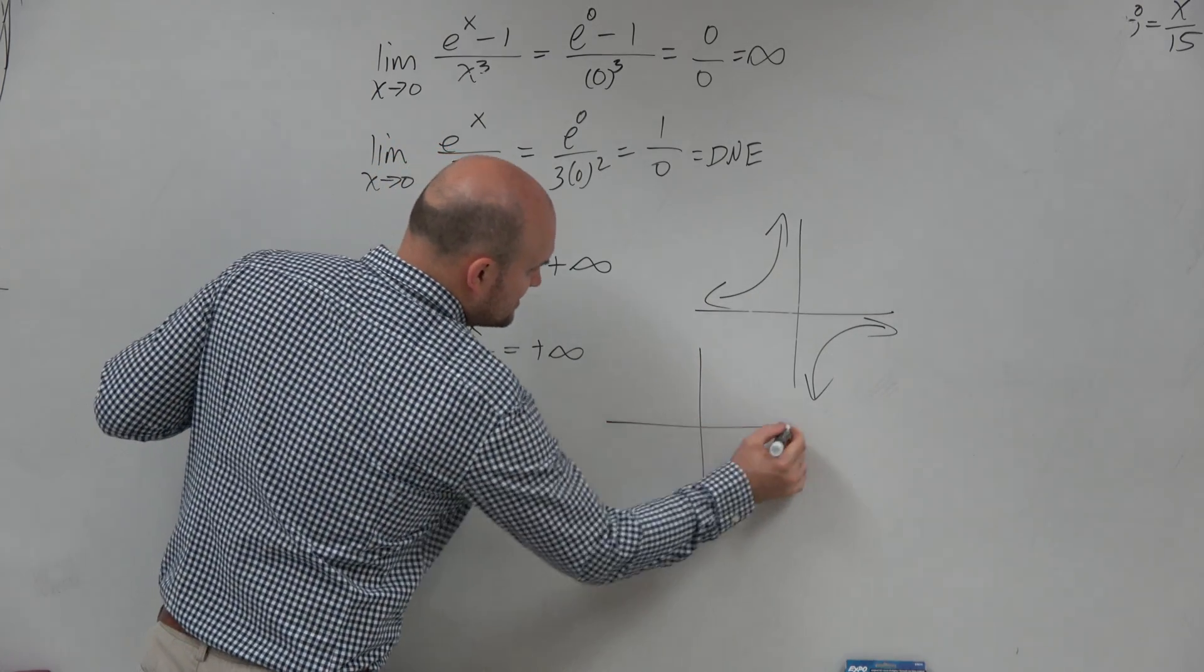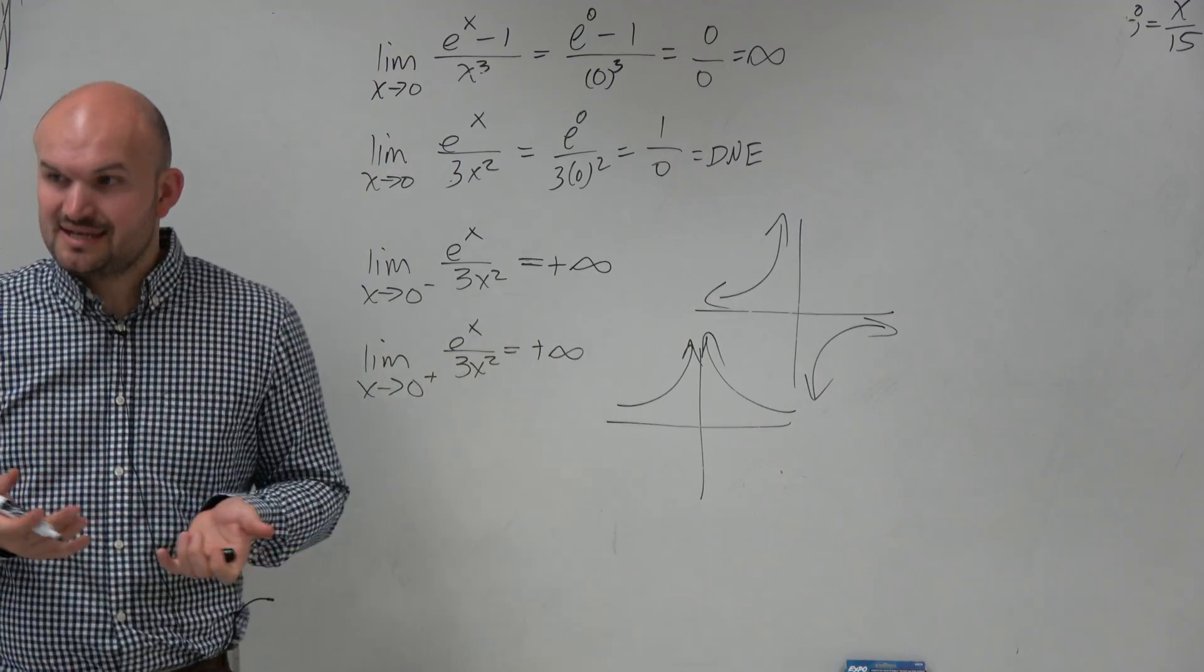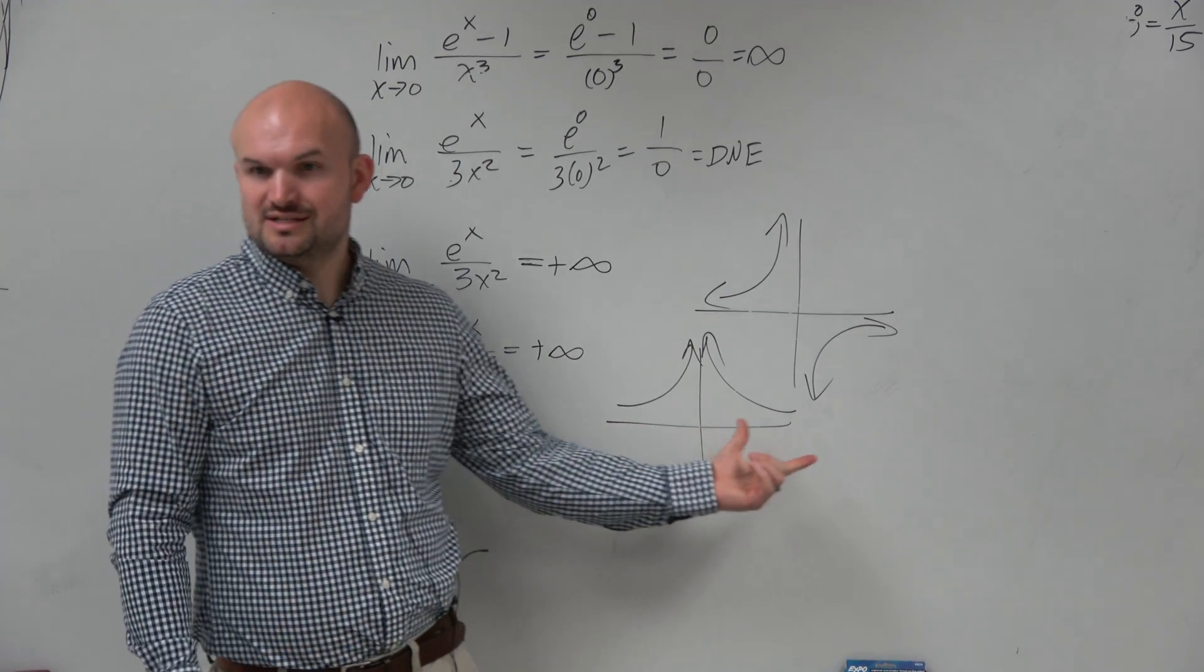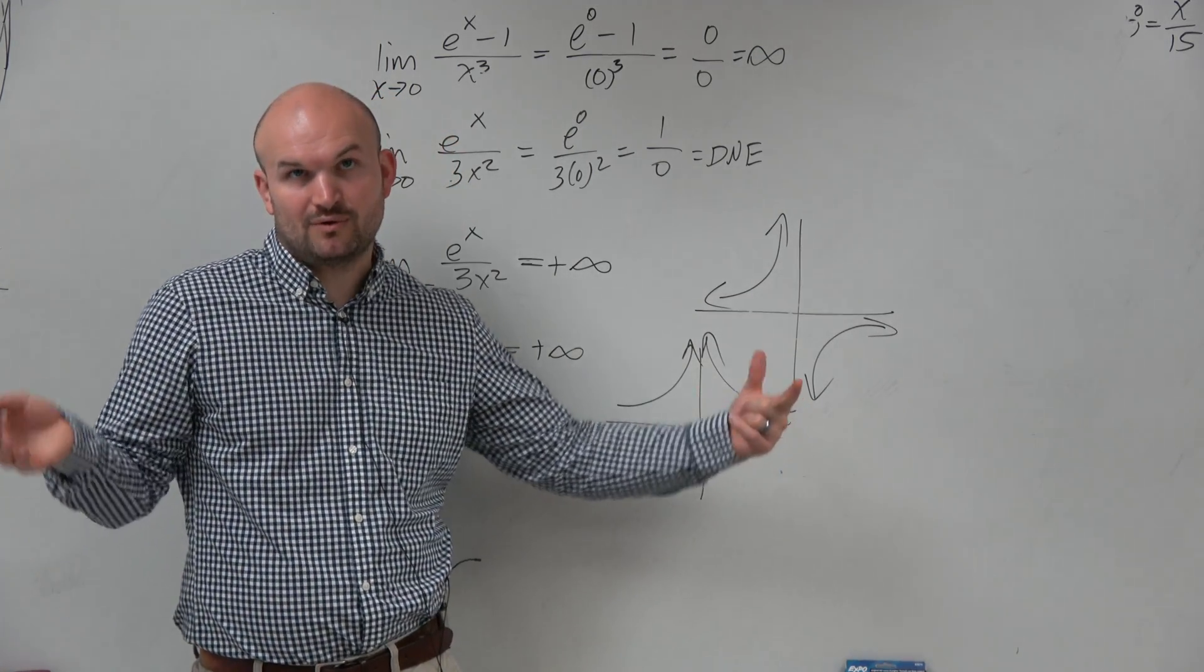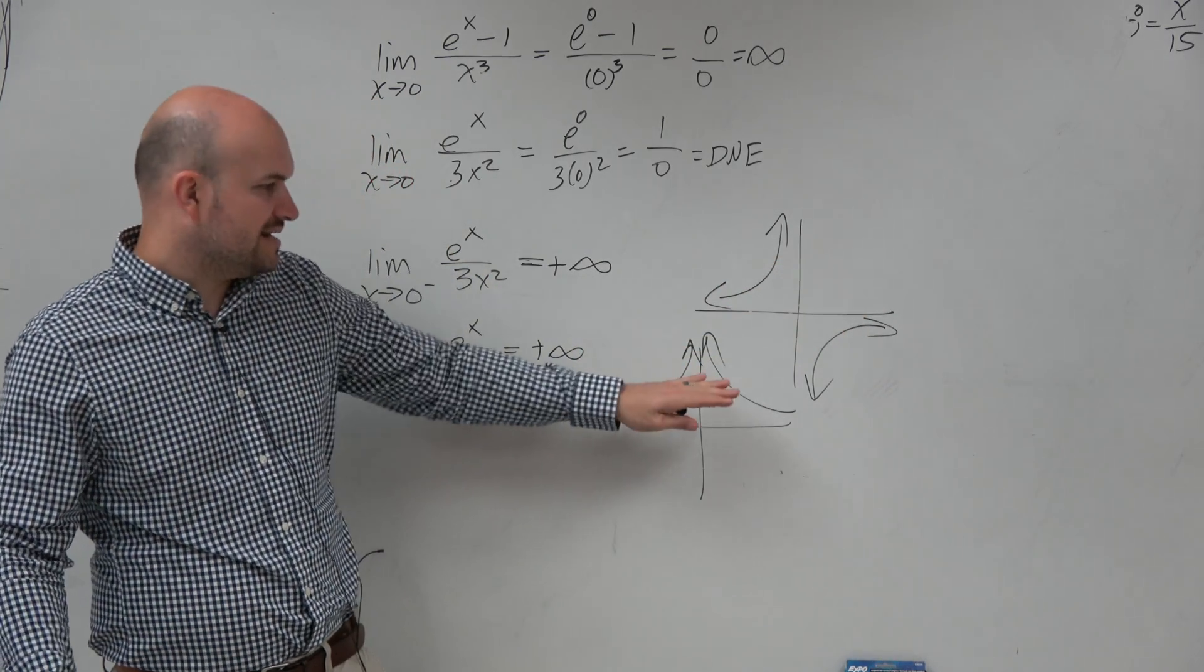However, if we had a function like this, yes, the limit doesn't exist at 0. But there's something interesting that's going on. Because from the graph from the left and the right is both approaching infinity from the same value. So a lot of times, and again,